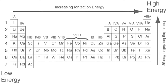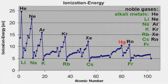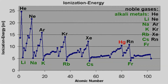Ionization energy is another one of the big trends found in the periodic table. This is the energy needed to remove an electron from an atom. Looking at only the main group elements, ionization energy increases along the periods. The elements in the first group have very low ionization energies because they only have one electron in their outer shell. Noble gases have extremely high ionization energies because their electron shells are already completely filled.